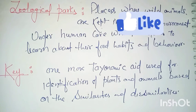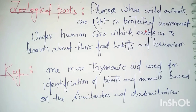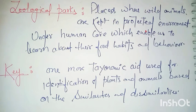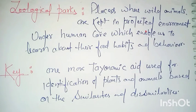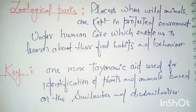Last comes the key — this is also a taxonomic aid, which identifies plants and animals on the basis of their similarities and dissimilarities. The main thing to keep in mind is that it depends on contrasting characters, generally in pairs called couplets. It represents a choice made between two opposite options — one has to be accepted and the other rejected.